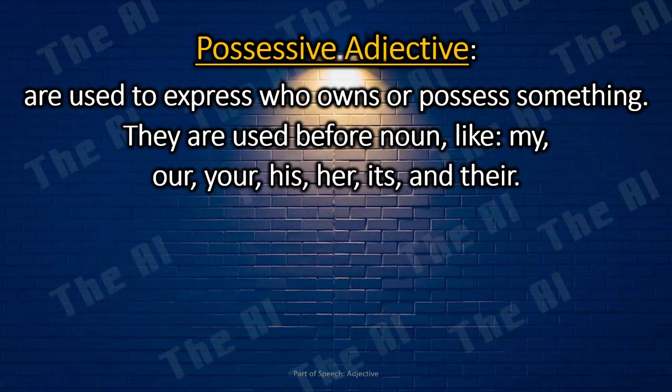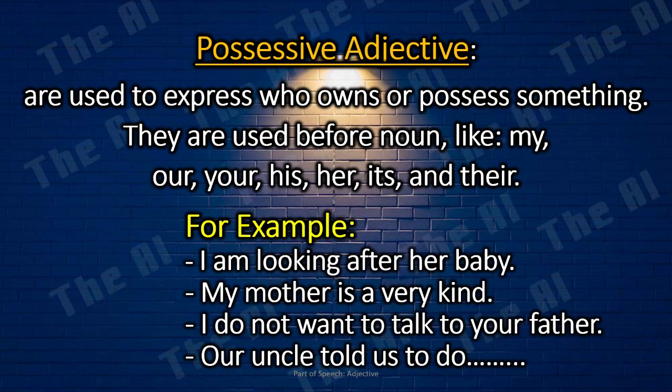Possessive Adjectives. Possessive adjectives are used to express who owns or possesses something. This is used in front of a noun, like my, our, your, his, her, its, and their. For example: I am looking after her baby. My mother is very kind. I do not want to talk to your father. Our uncle told us to do our homework.